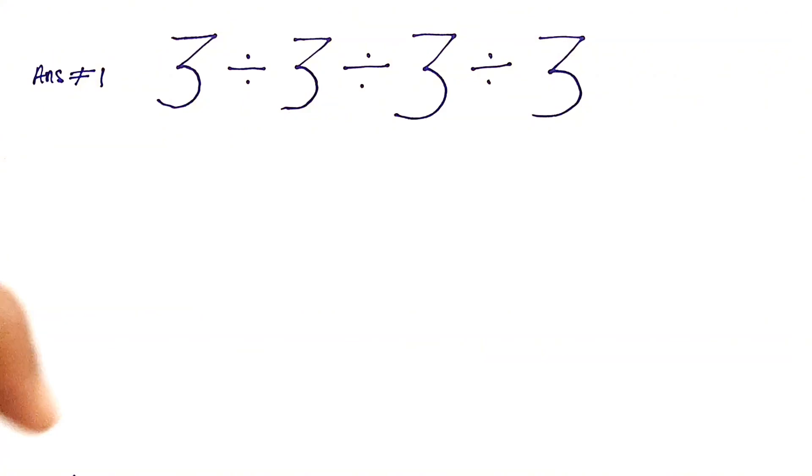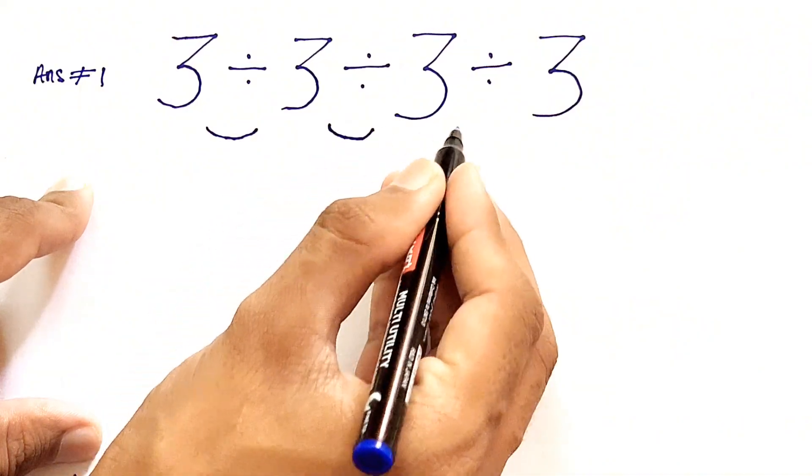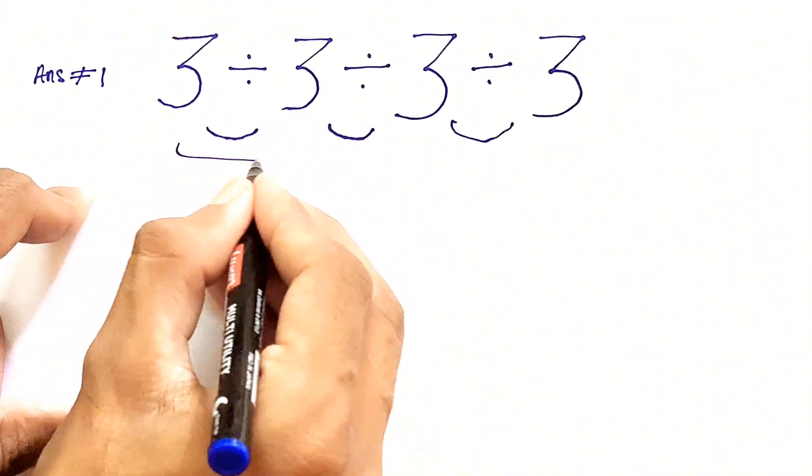So let's find out what's the actual answer to this expression. Whenever we are solving an expression we need to go from left to right, so we'll go from 3 divided by 3 first, which gives us 1.